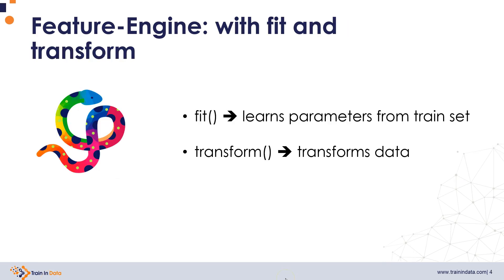Feature Engine transformers, just like scikit-learn transformers, contain the methods Fit and Transform. With the method Fit, the transformer will learn the parameters from the train set that it will need to use to transform the datasets. And with Transform, the transformers will transform the datasets with the learned parameters.